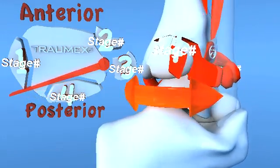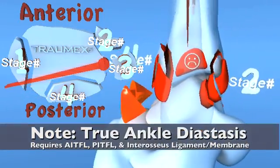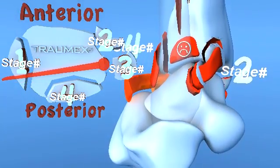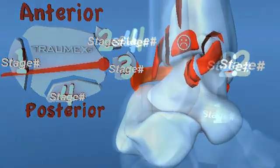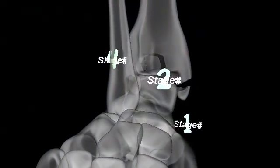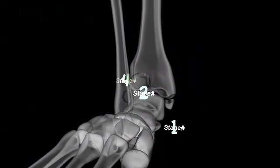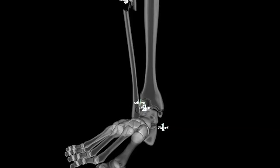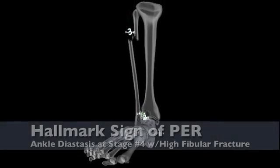Note: the combined rupture of the anterior inferior tibial fibular ligament, the posterior inferior tibial fibular ligament, and the interosseous membrane results in a true ankle diastasis. In summary, the hallmark signs of this injury include forces beginning along the medial axis of the tibia; rupture of the interosseous membrane in conjunction with rupture of the anterior inferior tibial fibular ligament and the posterior inferior tibial fibular ligament creates a true ankle diastasis.